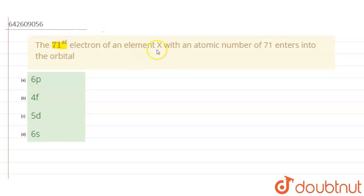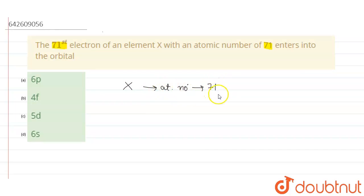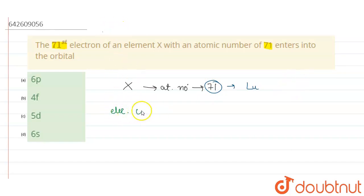This question asks: the 71st electron of an element X with an atomic number of 71 enters into which orbital? We have element X with atomic number 71, which is Lutetium (Lu). So let's write the electronic configuration of Lutetium.